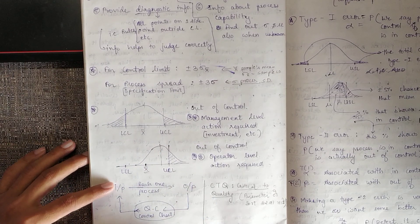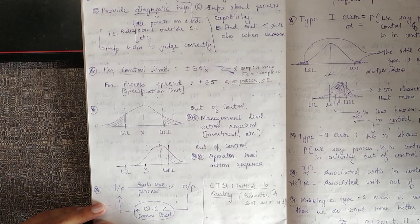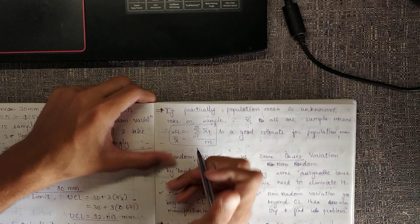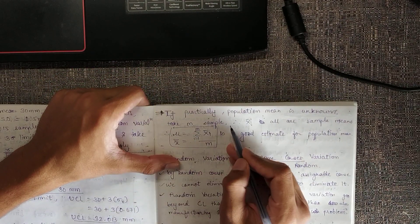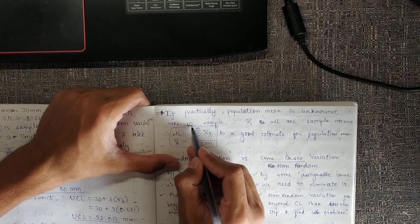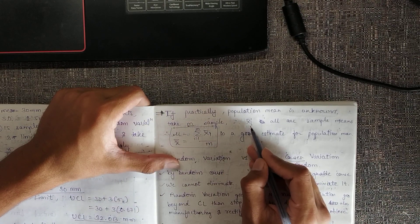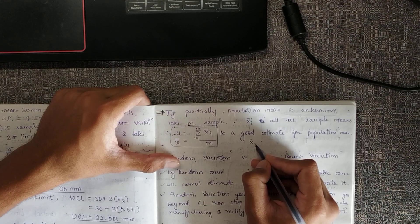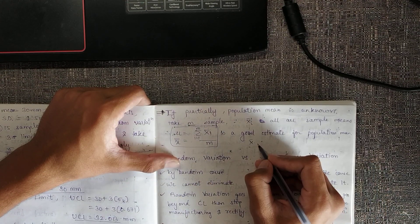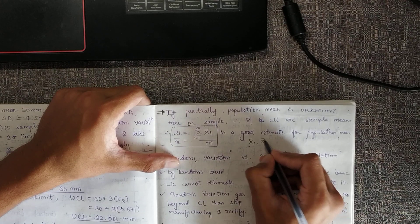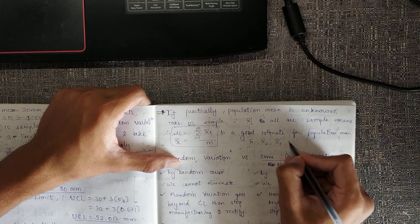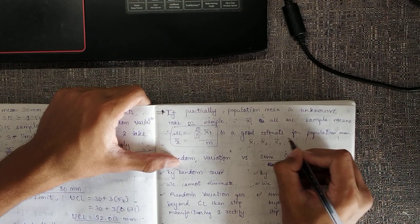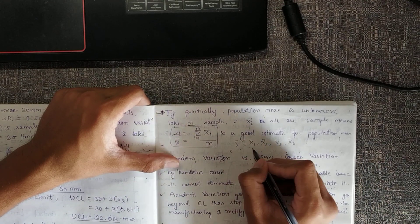Range is defined as x-max minus x-min — the maximum dimension recorded minus the minimum dimension recorded. When the population mean is unknown, if we have m samples each with n items, and x-i-bar are the sample means, then the process mean can be estimated as the grand mean x-double-bar, which is the average of all sample means.